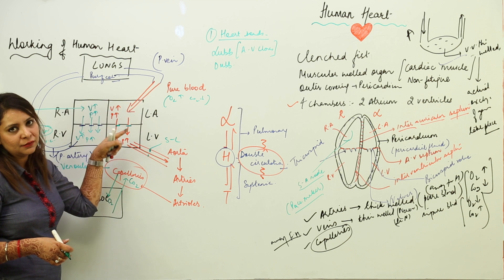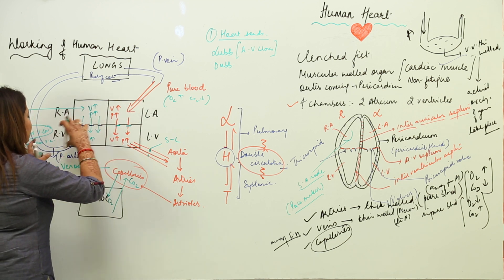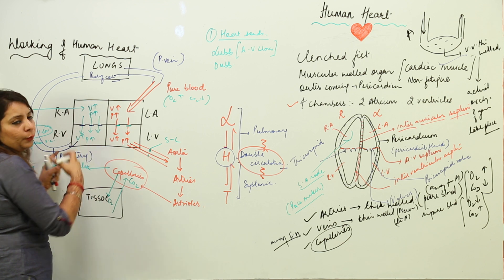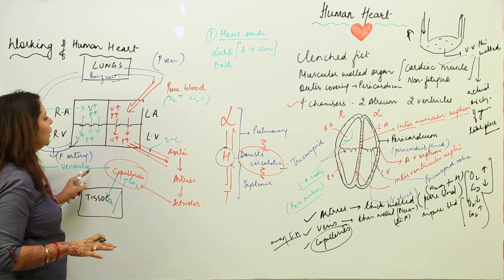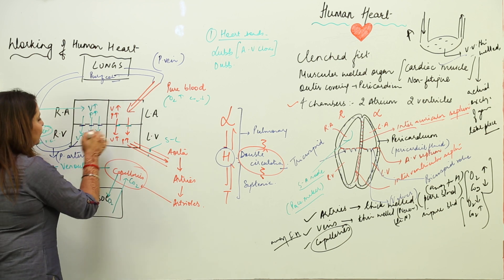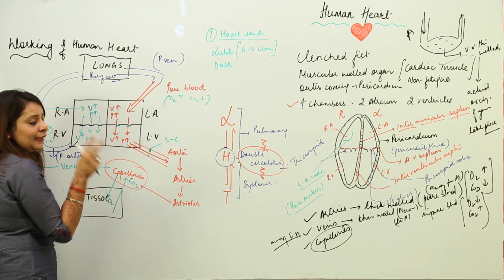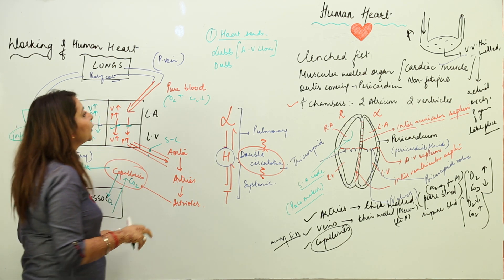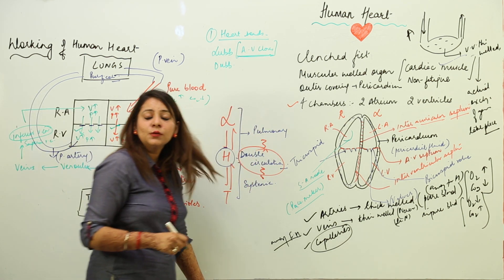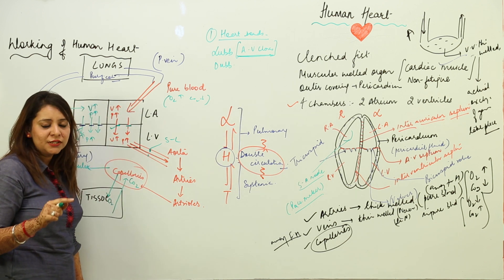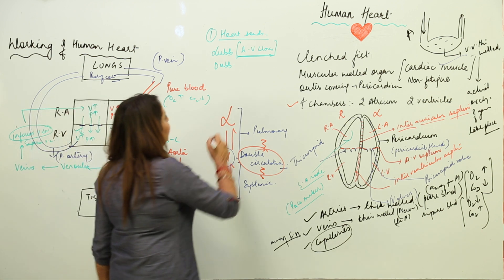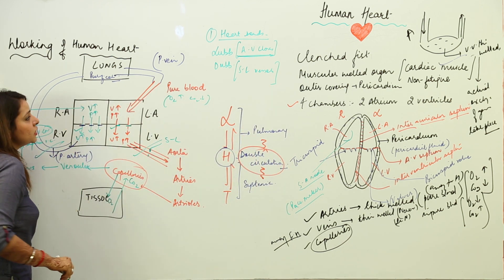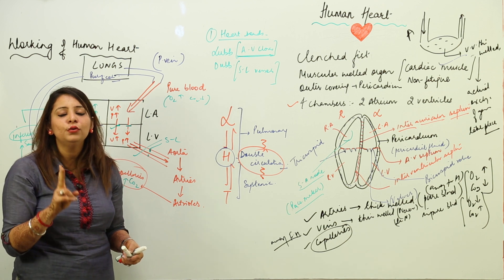When the left atrium pumps pure blood to the left ventricle, it is simultaneously being filled with pure blood. Similarly the right ventricle pours blood into pulmonary arteries while being filled with impure blood. The valves open and close at the same time: when the AV septum — bicuspid and tricuspid — closes, it produces the sound 'lub'.